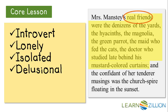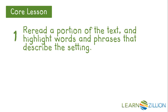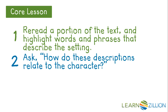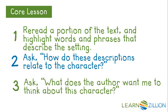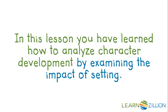So when we are trying to figure out how an author uses description to develop a character, we can follow these three steps: first, reread a portion of the text and highlight words and phrases that describe the setting; then ask, how do these descriptions relate to the character?; and finally, ask, what does the author want me to think about this character? In this lesson, you have learned how to analyze character development by examining the impact of setting.